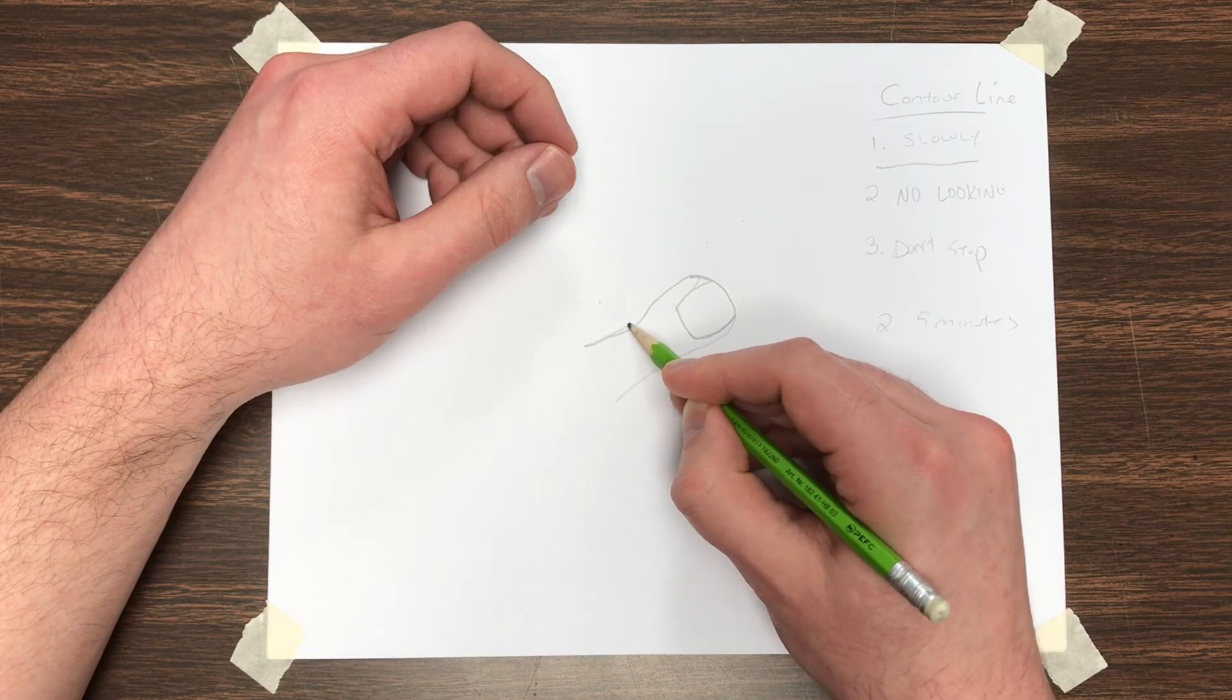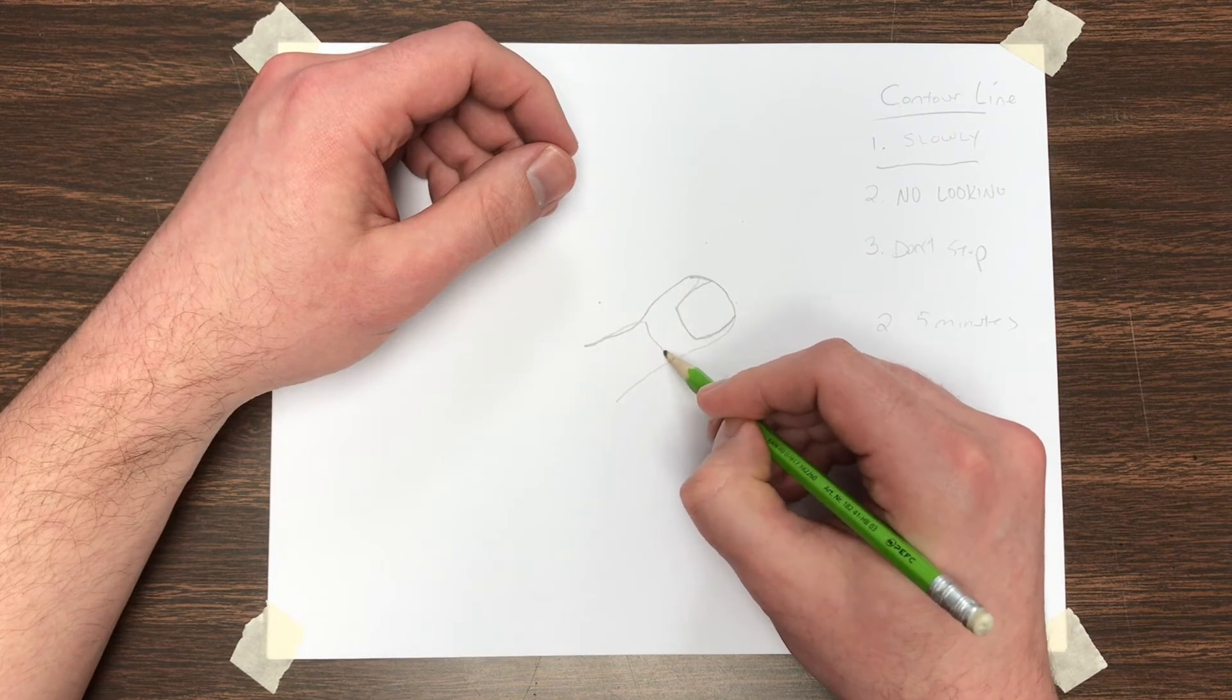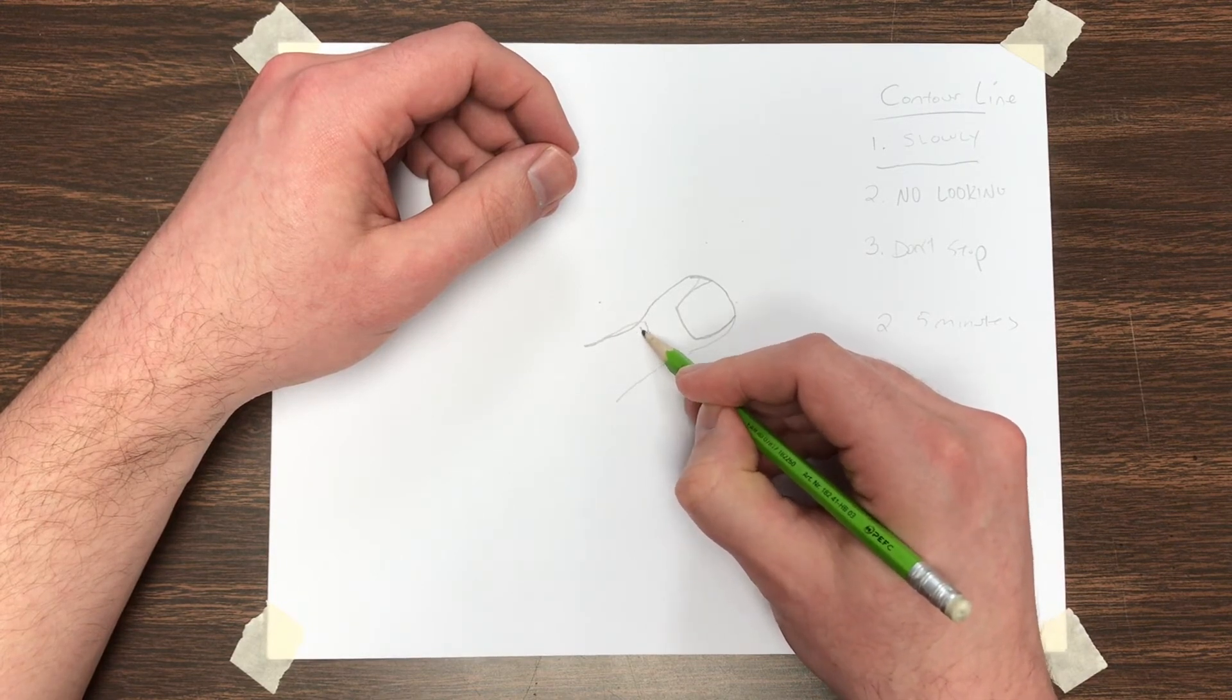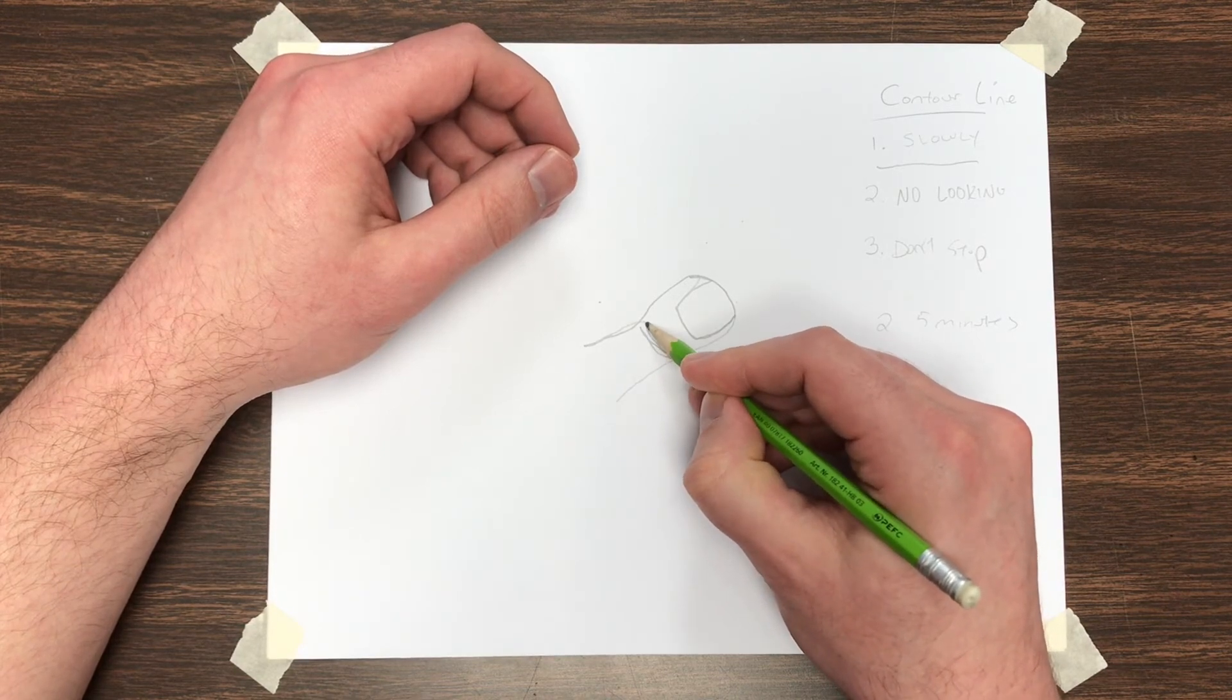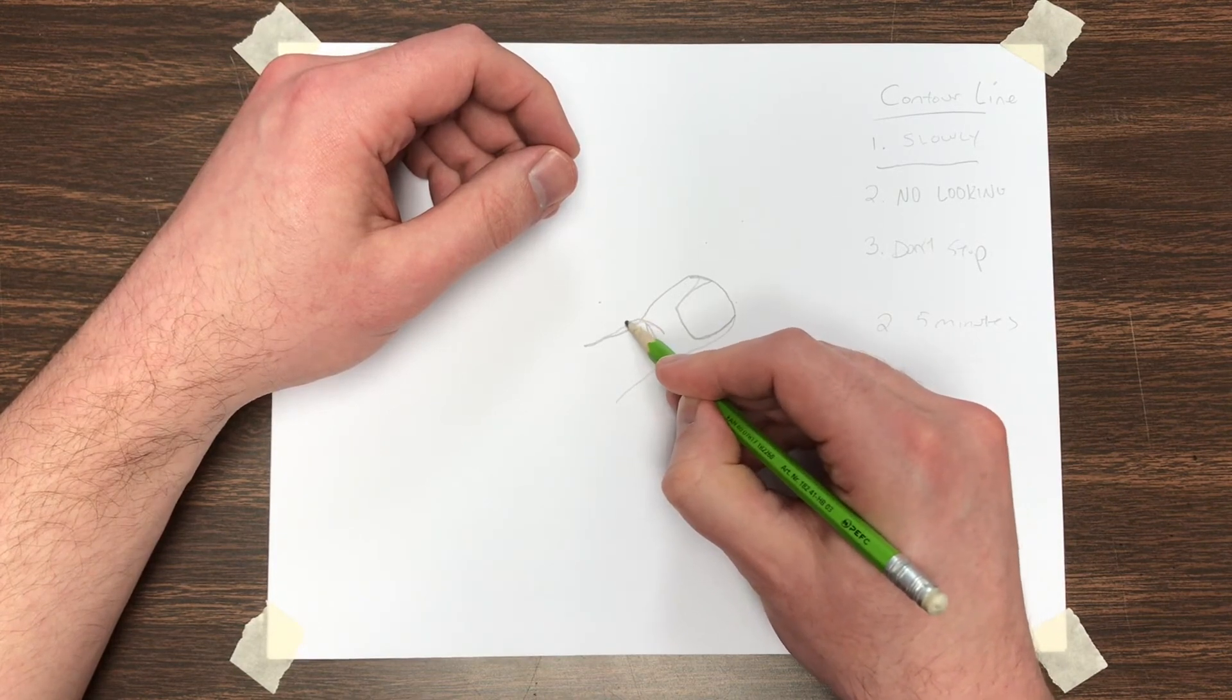Now if I want to go back and get those wrinkles that are in the middle of my thumb knuckle, I still have to keep the pencil on the page. So they're going to connect there.